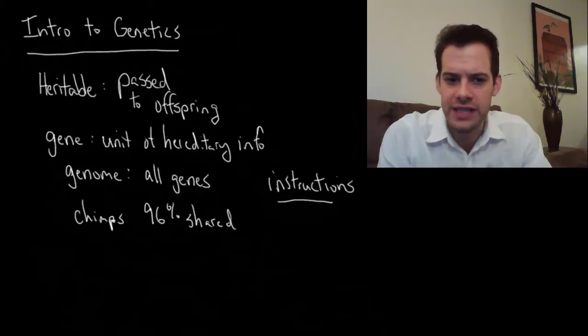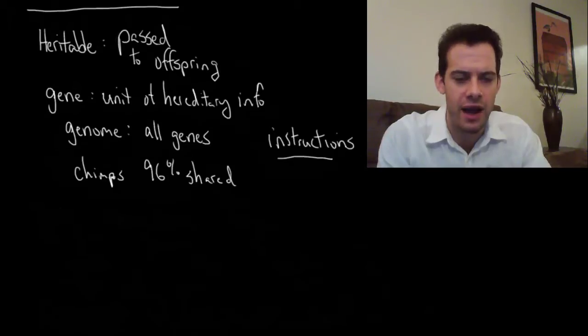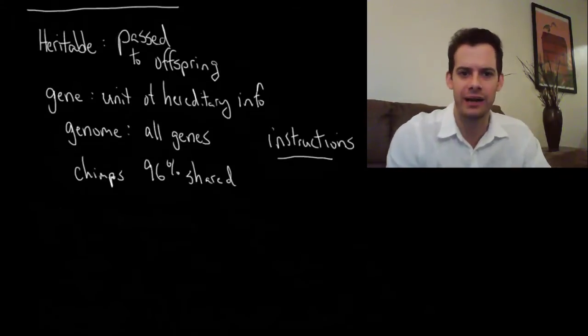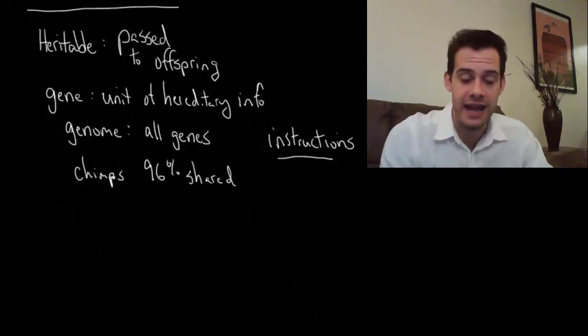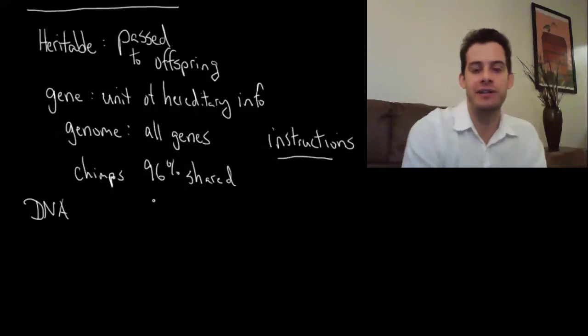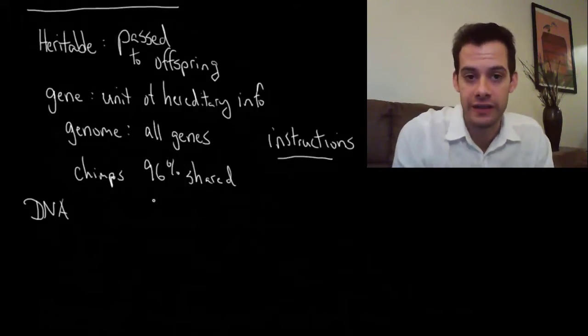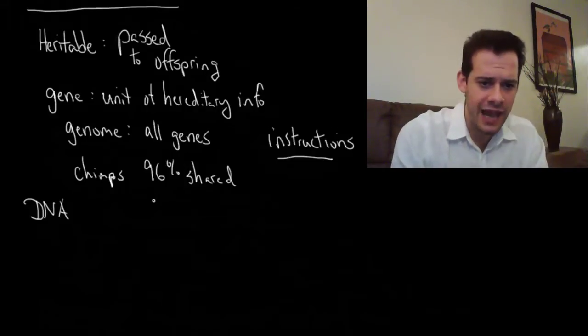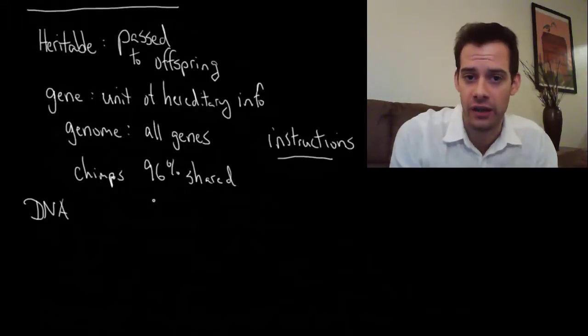Now you might ask, how does this information get passed from parents to offspring and how do I get it from mom or from dad? When we talk about our genetic information, we talk about our DNA. Our DNA is essentially this set of all these instructions and it's inside almost all of the cells in our body.